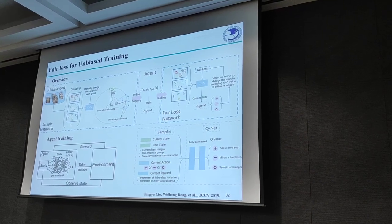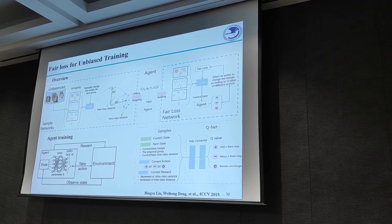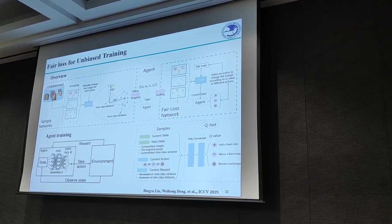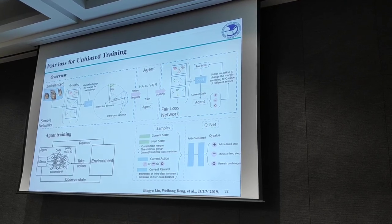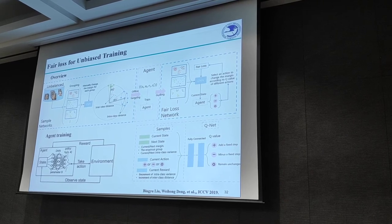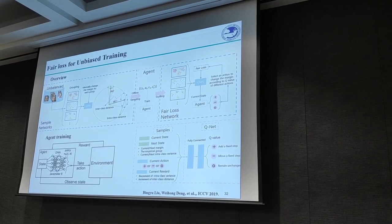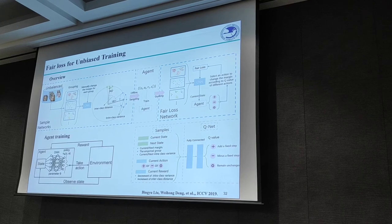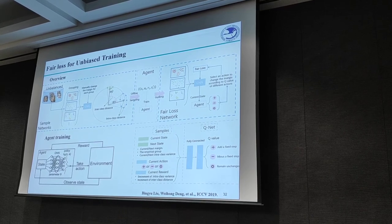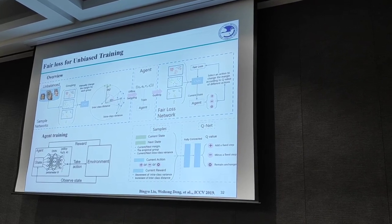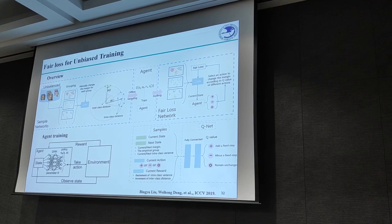Another source of bias may trace to the algorithms themselves. Current methods tend to optimize for races that appear more frequently, which boosts accuracy on test sets with the same bias. We trained an intelligent agent using reinforcement learning to adaptively tune the margin requirements for different groups of classes. By turning the margin adaptively, the agent successfully balances the rewards of large inter-class distance and small intra-class distance, producing more equitable recognition performance across different groups of people.